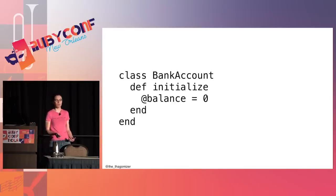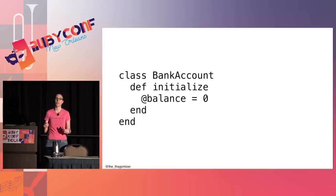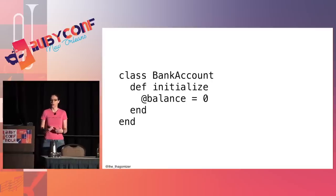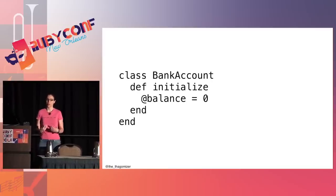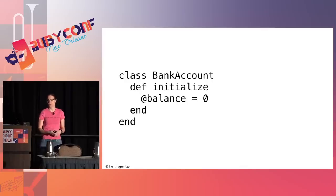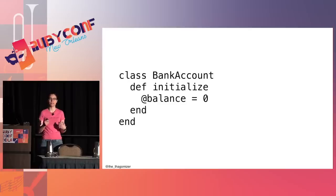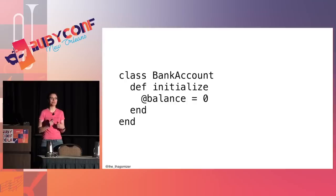I'm going to store balance as an instance variable and set it to zero when I initialize the object. I'm always going to represent money as an integer number of cents. If you are representing money as a float in any of your code, come talk to me later and I will teach you about why that is a horrible idea.